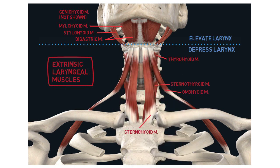Most of these muscles are named according to their origin and insertion, likewise for the ligaments that we learned previously. A lot of them are attached to the hyoid bone which is connected to the thyroid cartilage via the median and lateral thyrohyoid ligament we have seen.